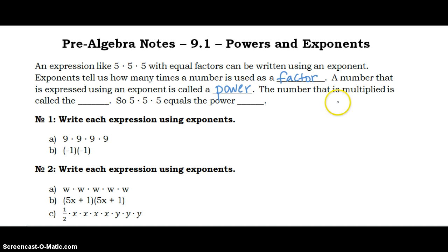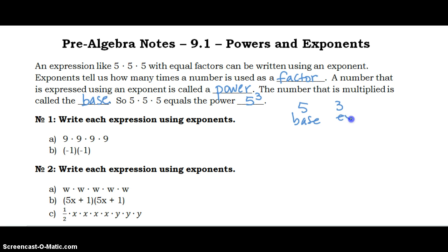The number that is multiplied is called the base. So, 5 times 5 times 5 equals the power of 5 to the third power, where 5 is our base and 3 is our exponent. And 5 is the factor — it's being factored 5 times 5 times 5, three times.